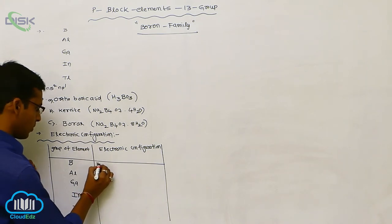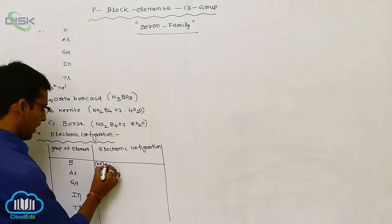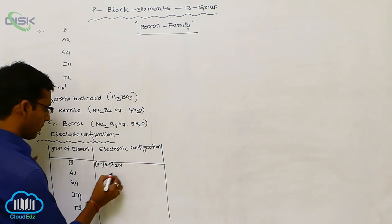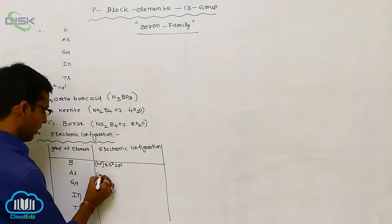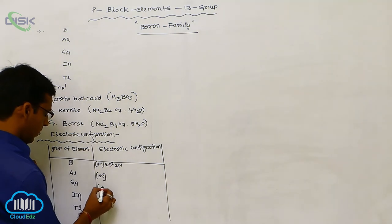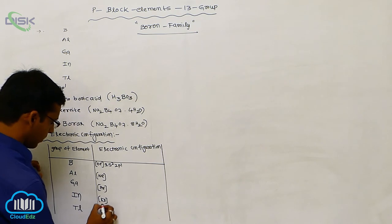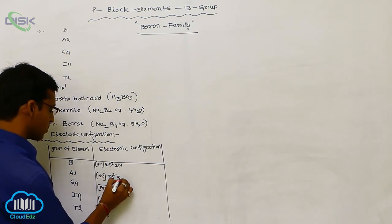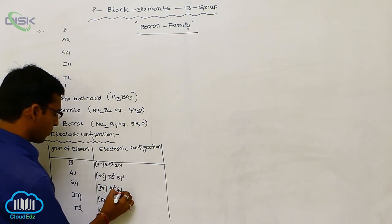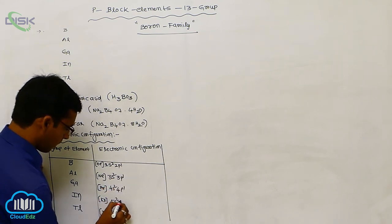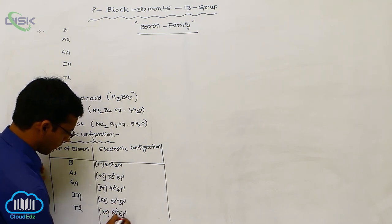So it is nearer to inert gas. The outermost shell containing here 2S2, 2P1, next one, neon, next, argon, krypton, xenon. This is 3S2, 3P1, 4S2, 4P1, 5S2, 5P1, 6S2, 6P1.